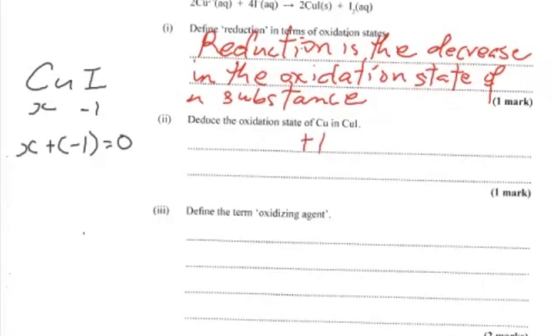Please note that for oxidation state, we write the sign before the number. For charges, you write the number before the sign. Even though you'll see in many textbooks it being used interchangeably, this is the correct sign convention.